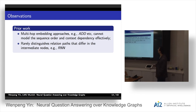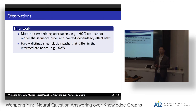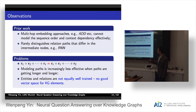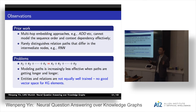Our observations over prior work: the modern approach cannot model the sequence order and the context dependency effectively. And prior work doesn't really distinguish paths which differ in the intermediate nodes, like a recurrent neural network. Problems for them: first, if you shuffle the relations, some networks will generate the same relation representations for them, so that sounds problematic. The second is modeling paths becomes increasingly hard as paths get longer.